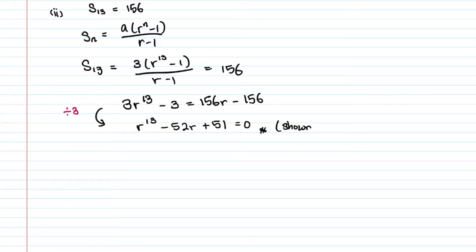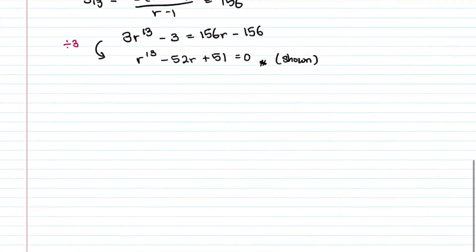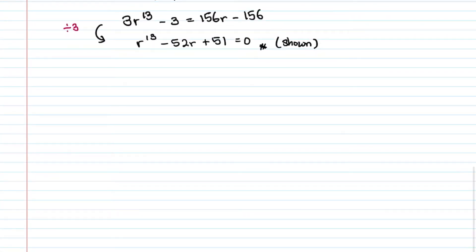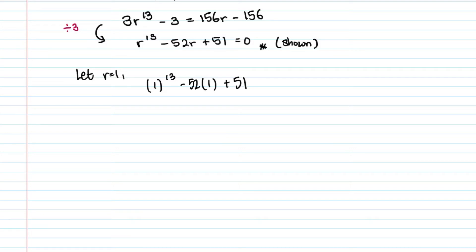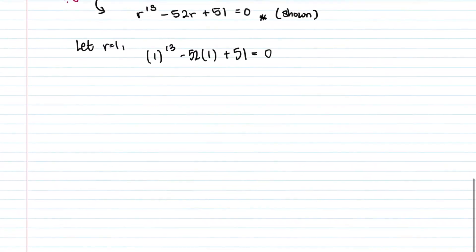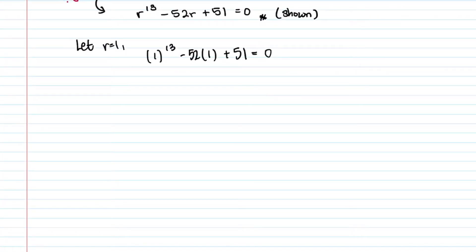For the next part, show that r cannot be 1. You might think to substitute r=1 into the equation: 1¹³ − 52(1) + 51 = 0. This equals zero, so it looks like r=1 works — but that is a common mistake. This method does not prove r cannot be 1, because it only confirms r=1 is a root, not whether it's valid geometrically.